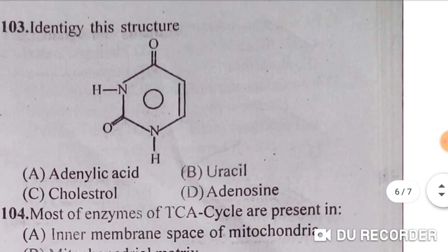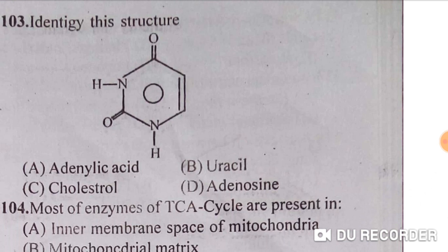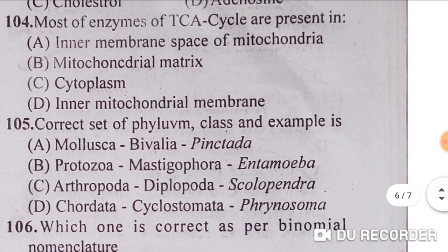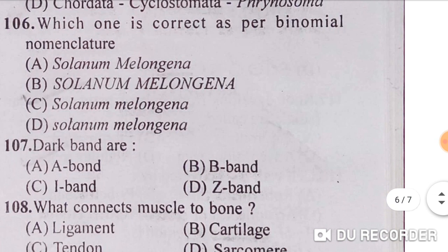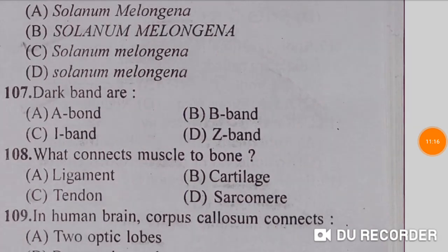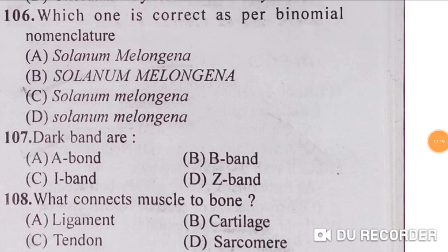Identify the structure — this is the structure of uracil — option B is correct. Most enzymes of the TCA cycle are present in the mitochondrial matrix — option B is correct. The correct set of phylum, class, and example is Mollusca, Bivalvia, and Pinctada — option A is correct. As per binomial nomenclature, the genus name's first letter should be capital and the species name should be in lowercase — option C, Solanum melangena, is correct.